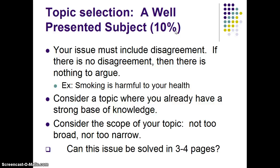You want to pick something you already have some foundational knowledge about, or something you want to learn more about. Consider the scope of your topic — it can't be too big. Topics like the death penalty, euthanasia, abortion, and suicide are really big and really overused. Try to be unique but not too broad or too narrow. Ask yourself: can I make my point and support it while also arguing the other side in just three to four pages?